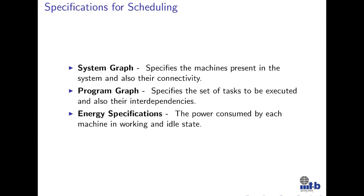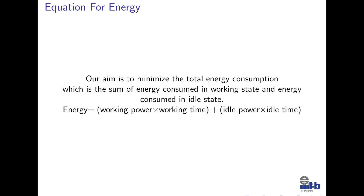The specification of scheduling is the system graph, the program graph, and the energy specifications. The system graph is a graph of machines and is a fully connected mesh. The program graph is a graph of tasks; it is a directed acyclic graph. The energy specifications are the power consumed by the machines in the working and idle states. The equation of energy in our system is given by: working power multiplied by working time, plus idle power multiplied by idle time.